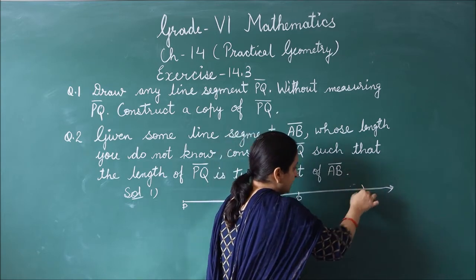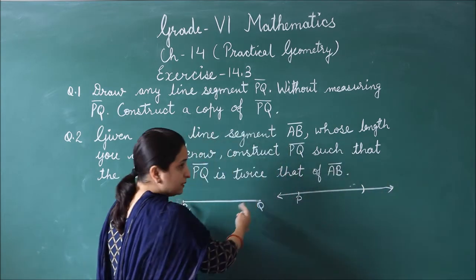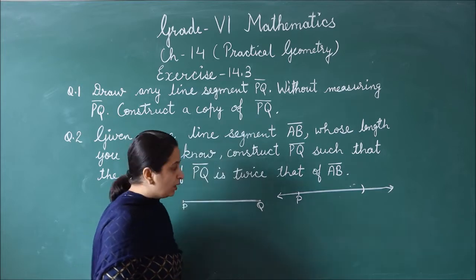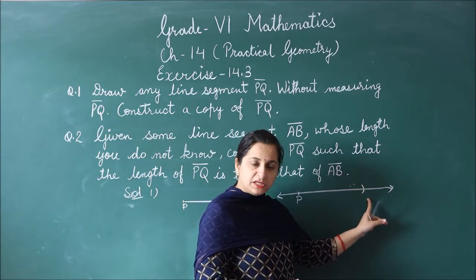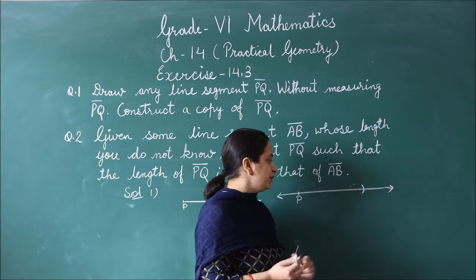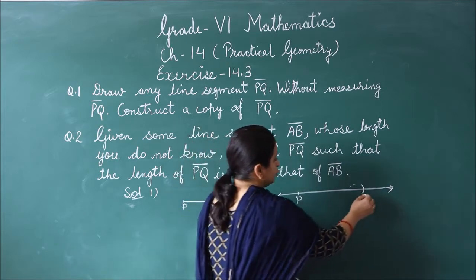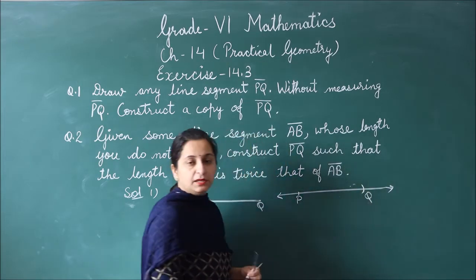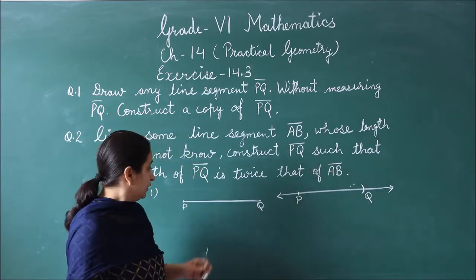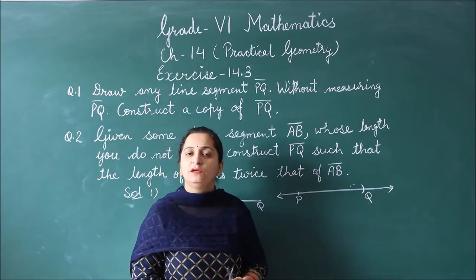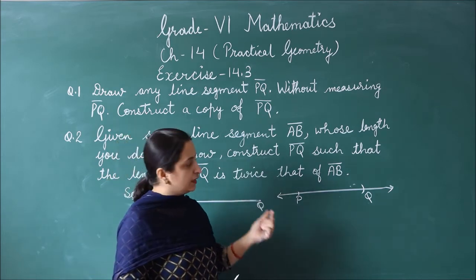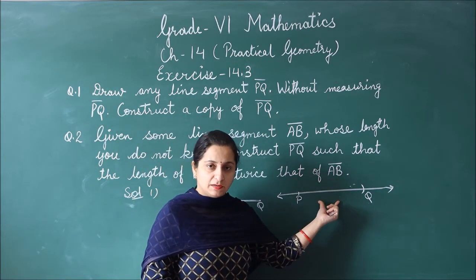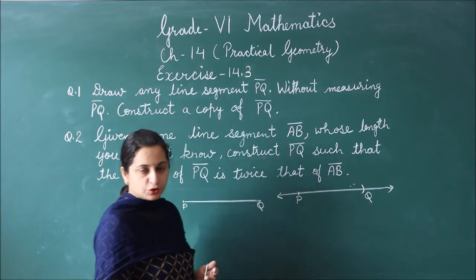We place the compass at this point and make an arc with the same measurement of your compass opening. This length is equal. If you check it with the ruler's help, it will be similar. This way, question number 1.